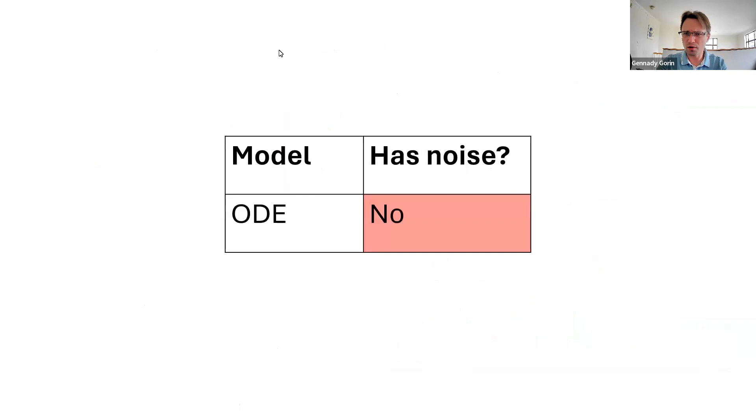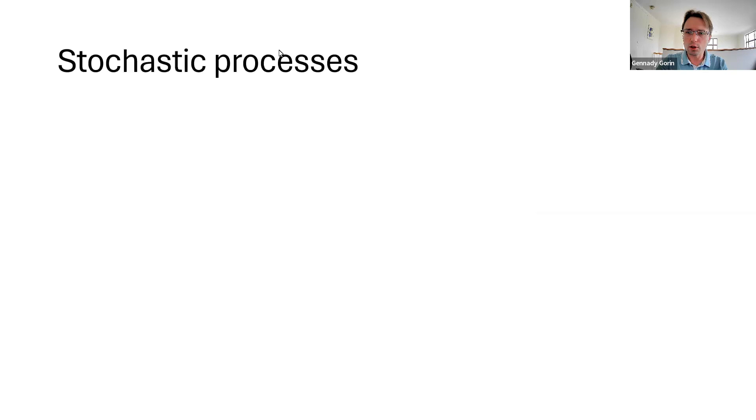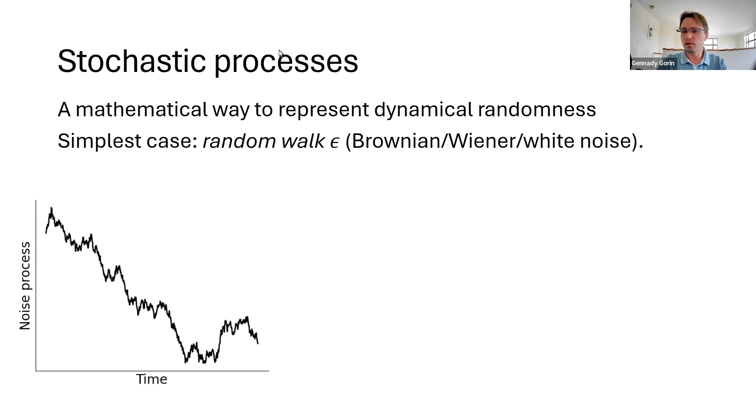So, we've tried a thing. It didn't work. Let's try again. To incorporate this variability, we need to use the machinery of stochastic processes. Now, we've seen something like this before when we conceptualized the randomness in the experimental process that not every single molecule is picked up. So, this is quite similar, but now we also want to include randomness in the dynamics. The simplest case is the random walk.